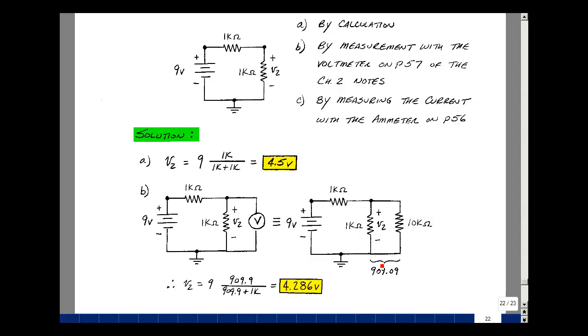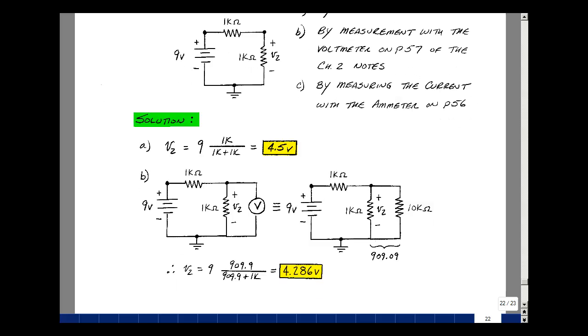So now if we calculate what the meter is going to read, it's going to be this equivalent resistance divided by the 1k plus that resistance times the 9 volts. And you get 4.286. So quite a different reading from what we would expect to see.